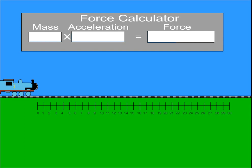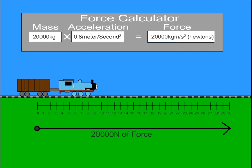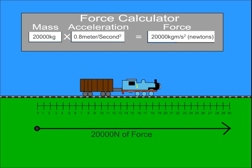If Thomas is pulling a 5,000 kilogram train car, then their combined mass is 25,000 kilos. If Thomas pulls with a force of 20,000 kilogram meters per second, or 20,000 newtons, then the acceleration of Thomas and the train car will be lower than previously at 0.8 meters per second.